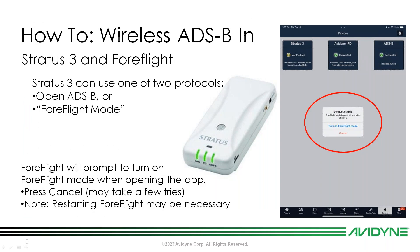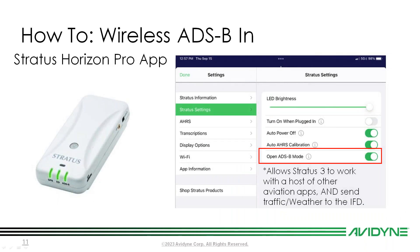A quick note about ForeFlight: if you bring up ForeFlight with a Stratus 3, you may see a prompt that says 'Stratus 3 Mode.' ForeFlight will try to put it into ForeFlight mode, which uses a different GDL90 protocol. You want to hit Cancel. If you allow it, ForeFlight sends a signal to the Stratus to switch to a different protocol, and traffic and weather will no longer show up on the IFD. Keep hitting Cancel until it stops prompting. If it continues, try restarting ForeFlight.